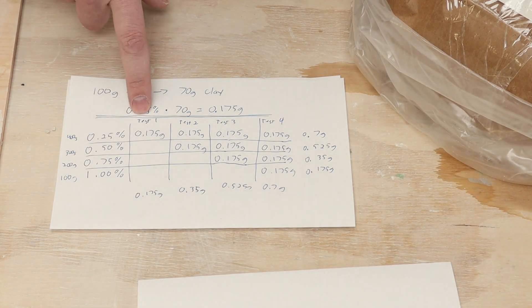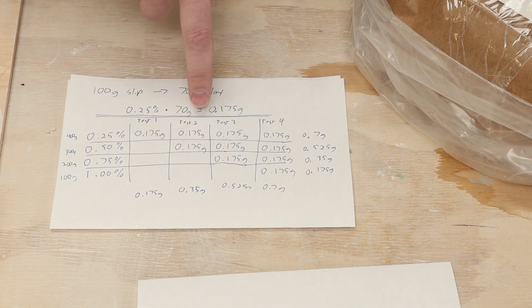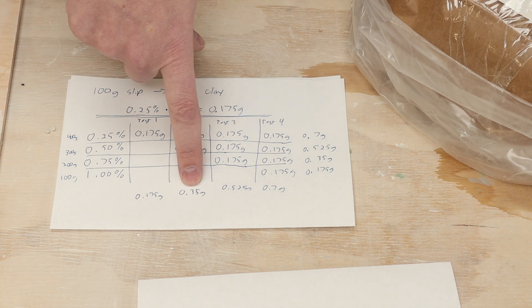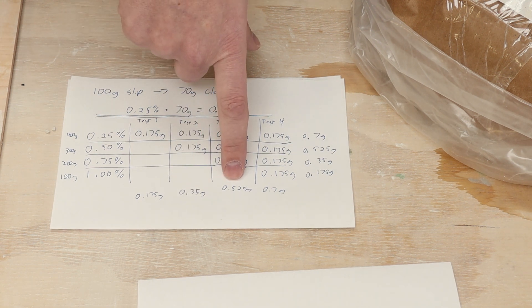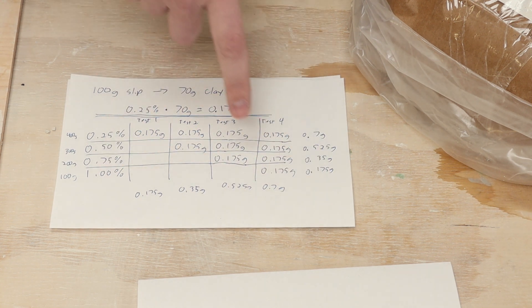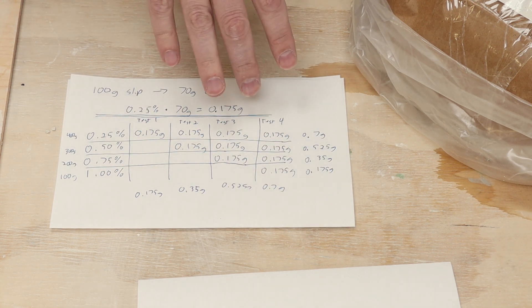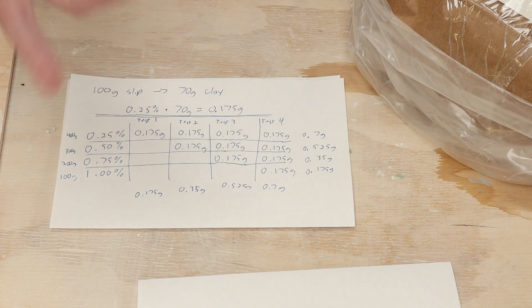And then finally I'll have 100 grams left and I'll need to add 0.175. So my first test tile will have the 0.175 grams. My second test tile will have two units of that to get to 0.5 percent, so it'll have 0.35 grams. The third test tile will have 0.525 and the last one will have 0.7. You'll notice these numbers are the same. It's because I'm doing four different test tiles with four different percentages. I could potentially vary this and the numbers would be different. That's just how it worked out this time.